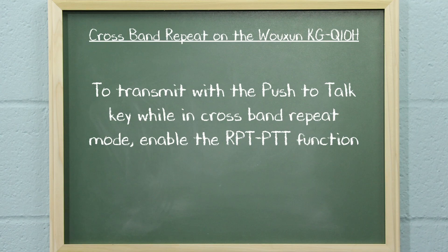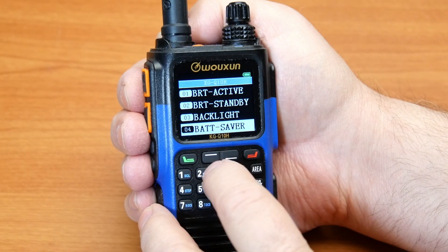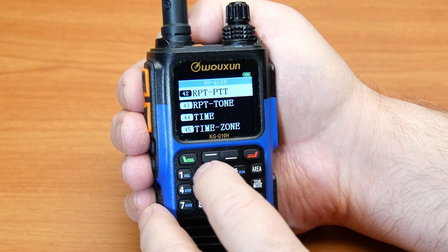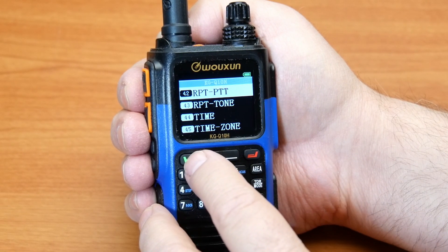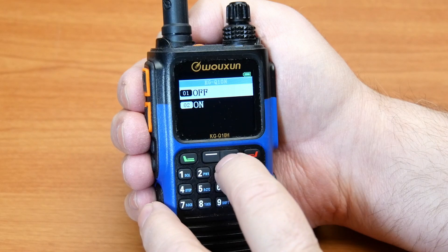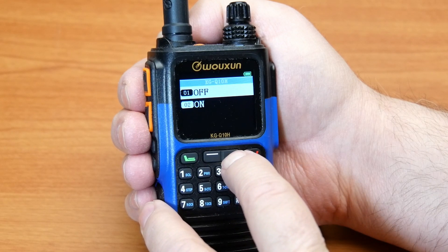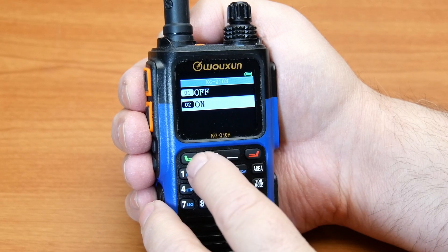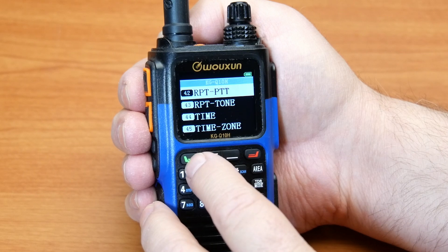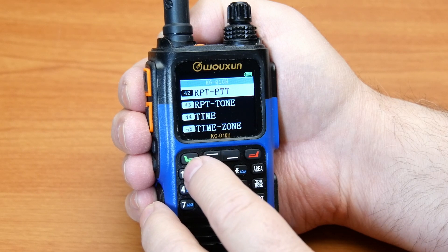To transmit with the push to talk key while in crossband repeat mode, enable the RPT PTT function. While still in the system menu, enter 4 and 2 on the keypad to select RPT PTT and press menu. Turn the channel knob or press the up and down keys to select on or off, then press menu to save it and return to the system menu.